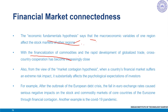Next, with the financialization of commodities and the rapid development of globalized trade, cross-country cooperation has become increasingly close, and the circulation of goods, services, and assets has become more convenient, resulting in an increase in the interaction of global financial markets. From the view of the market contagion hypothesis, when a country's financial market suffers an extreme recent impact, it substantially affects not only the financial market of countries with close trade and financial ties.